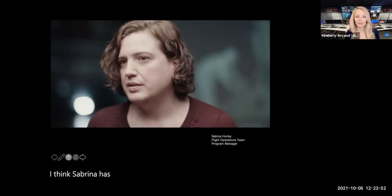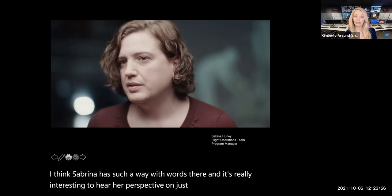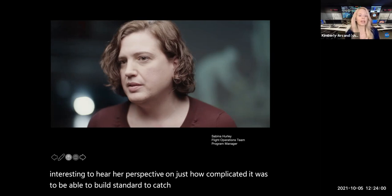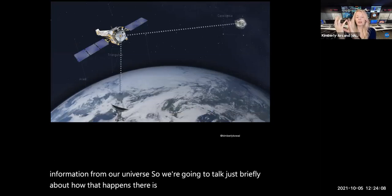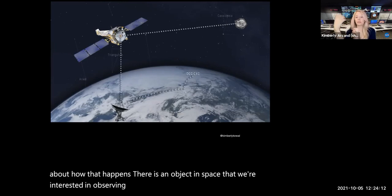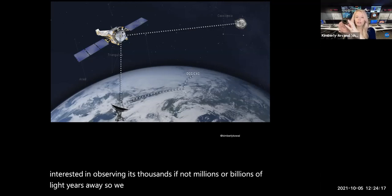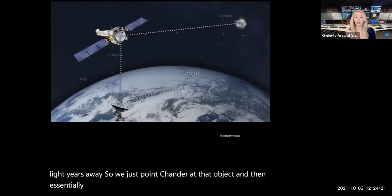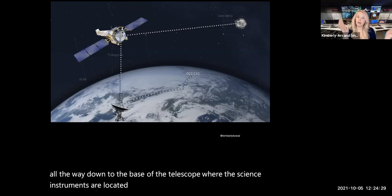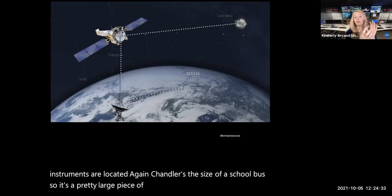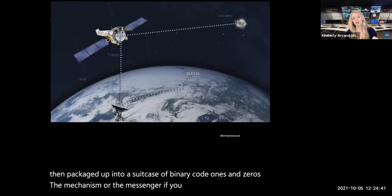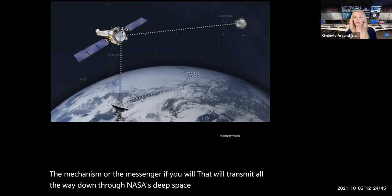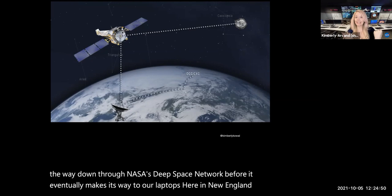I think Sabina has such a way with words there. And it's really interesting to hear her perspective on just how complicated it was to be able to build Chandra to capture all of that X-ray information from our universe. So we're going to talk just briefly about how that happens. There's an object in space that we're interested in observing. It's thousands, if not millions or billions of light years away. So we just point Chandra at that object and then essentially open it up to be able to make the observations that we're looking for. That information goes all the way down to the base of the telescope where the science instruments are located. Again, Chandra is the size of a school bus, so it's a pretty large piece of equipment. And that information is then packaged up into a suitcase of binary code, ones and zeros, the mechanism that will transmit all the way down through NASA's deep space network before it eventually makes its way to our laptops here in New England.